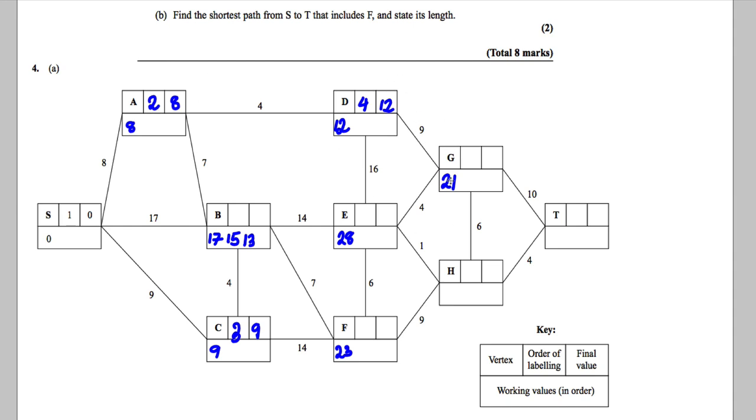Now you look for the smallest of 21, 28, 15, and 23. It's clearly this one. So this is number 5, and it's got a permanent value of 13 now.